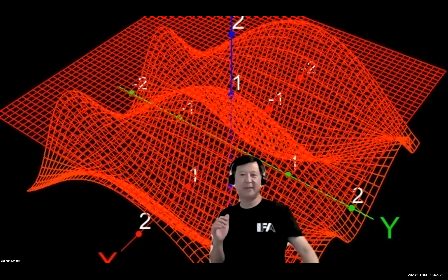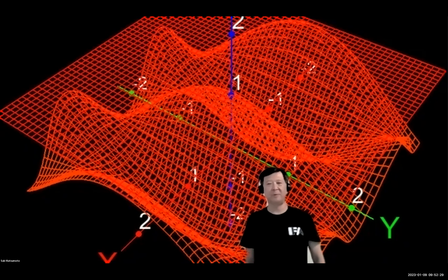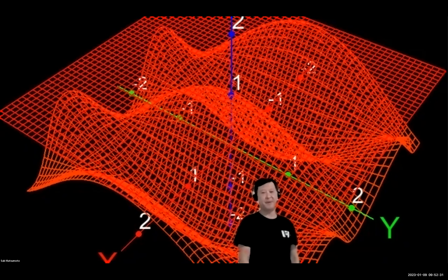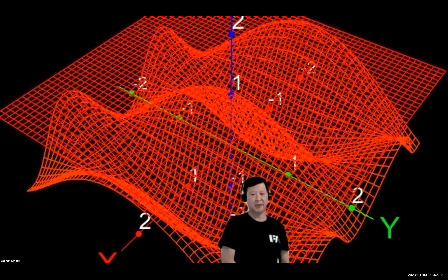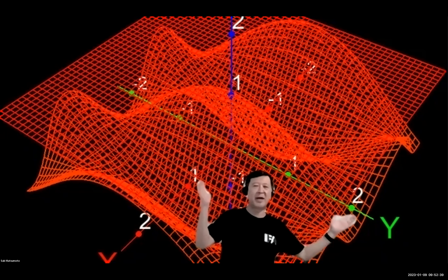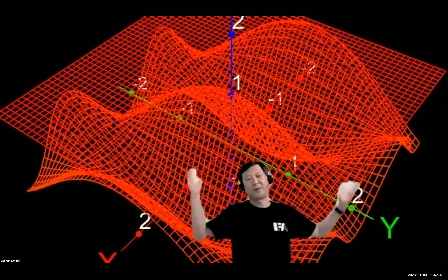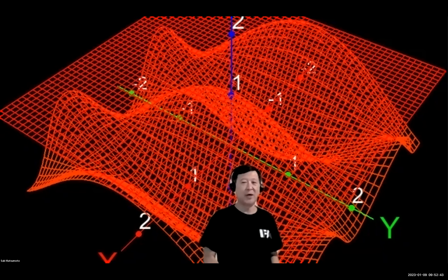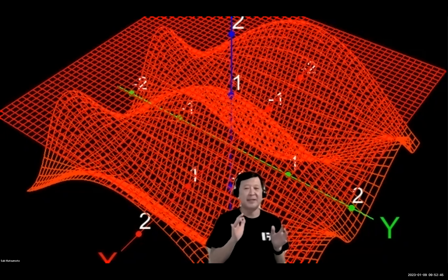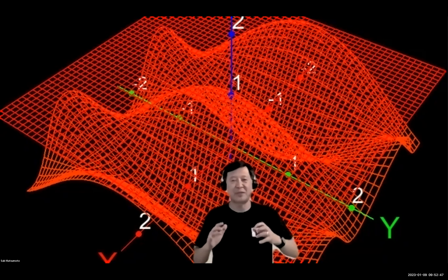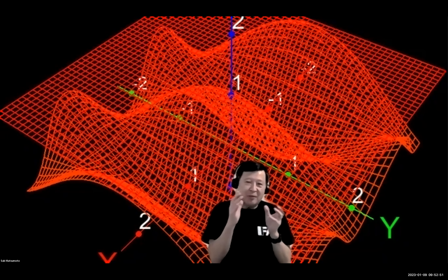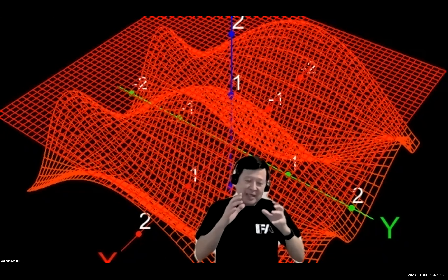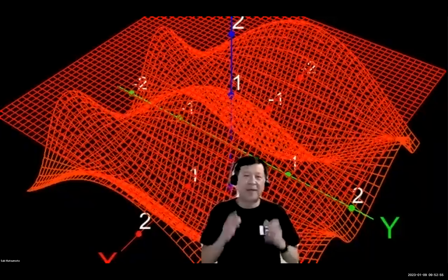Hello everybody. In section 4.2 we are going to study linear approximations. This is based on the principle illustrated by what you see behind me — this curved surface. Anything, anytime you have a curve or a surface that's smooth, if you get closer and closer and look at just a very tiny part of it, it becomes sort of like a flat plane.